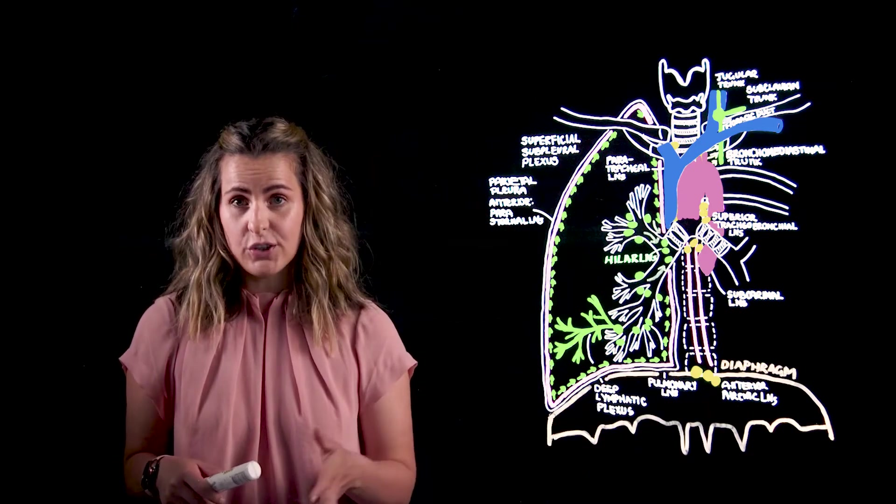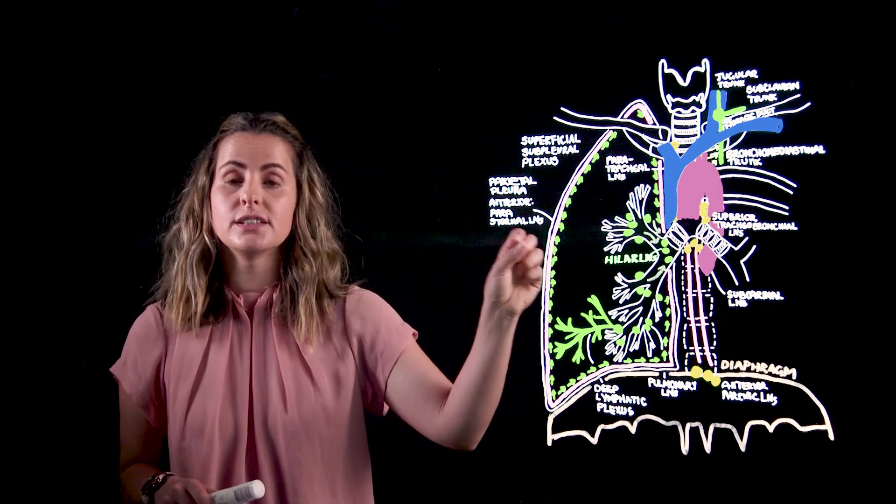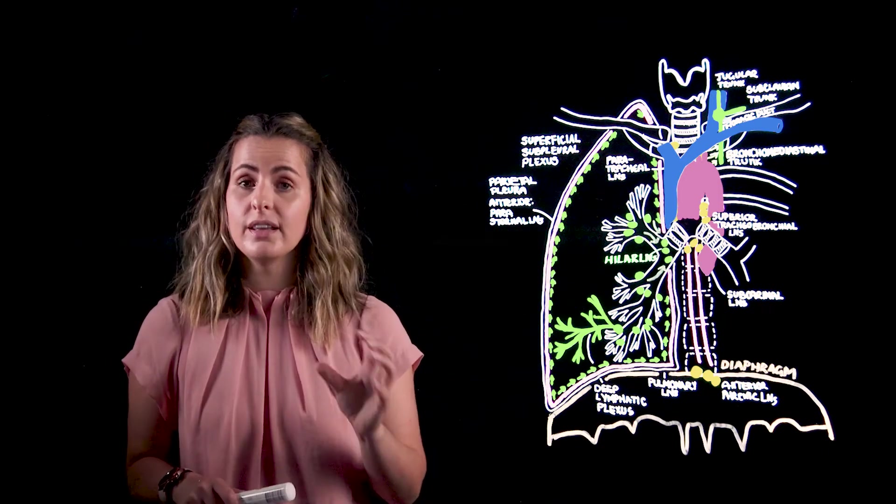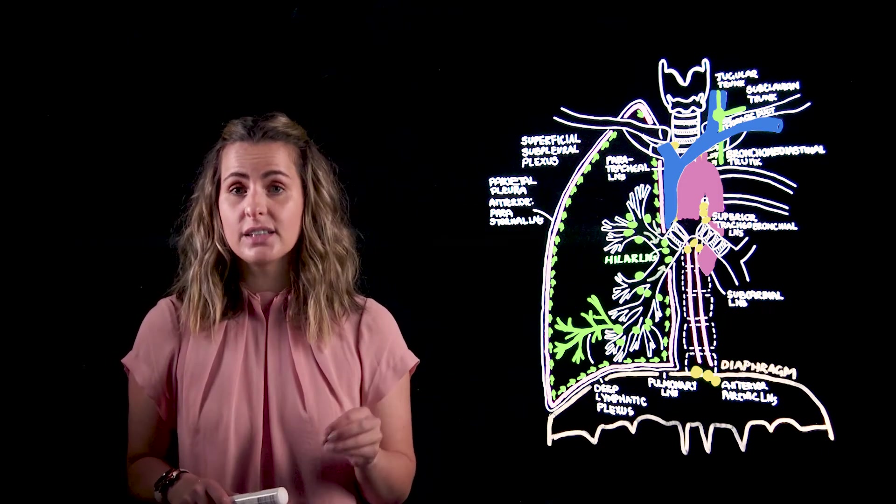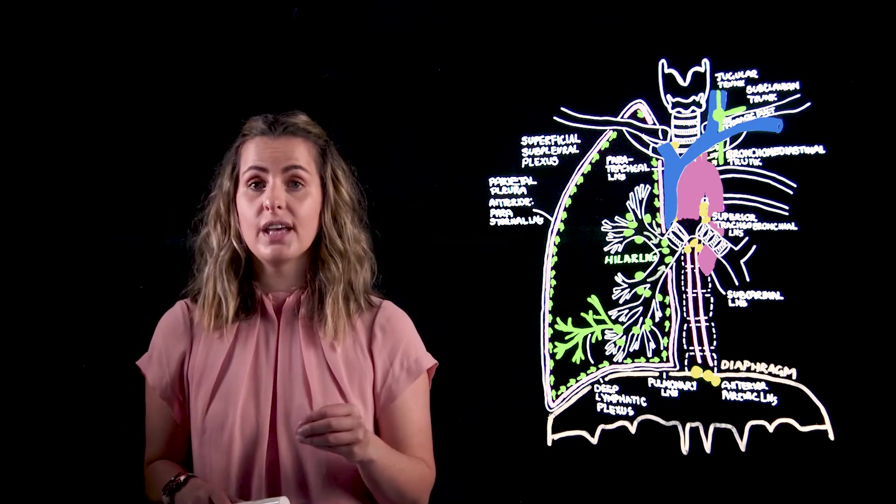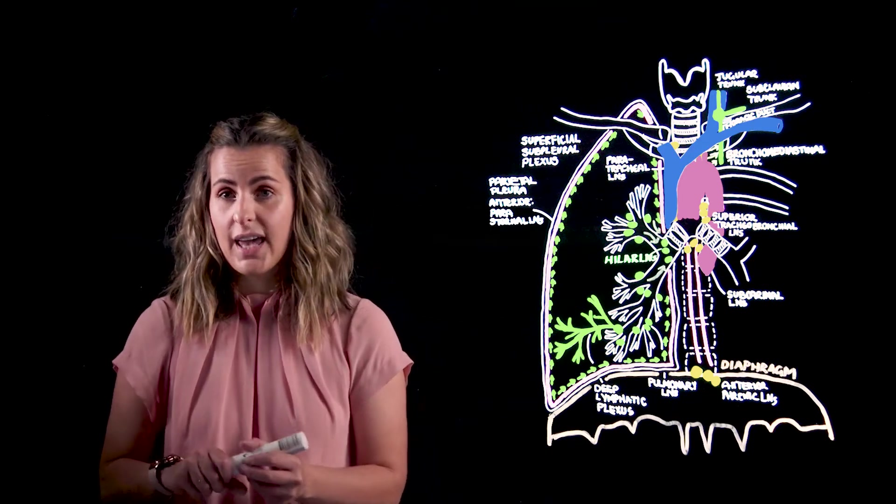The brachiocephalic nodes are located at the point where the left and right brachiocephalic veins confluence together to then form that superior vena cava.